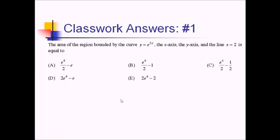For this problem, we want the area of the region bounded by y equals e to the 2x, the two axes, and the line x equals 2. Do we need absolute value? We know that e to the 2x is always positive — you can't get a negative or zero out of an exponential function, so we don't need any absolute value. There's not going to be any negative area; this is all above the x-axis.